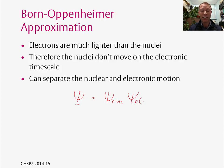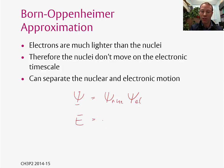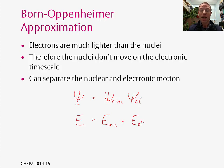Once we've separated the wave functions — you might remember this from the second year spectroscopy course — the energy now becomes a sum of two terms: a nuclear energy term and an electronic energy term. There are other terms as well, but for the purposes of this course we only need to think about the nuclear and electronic terms.